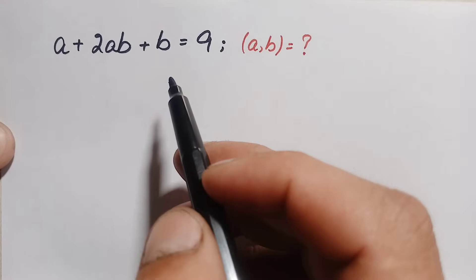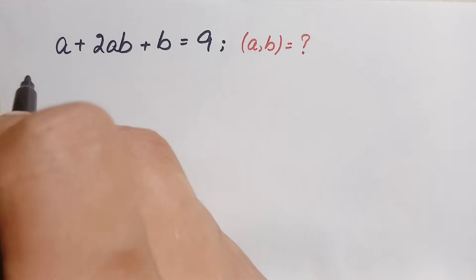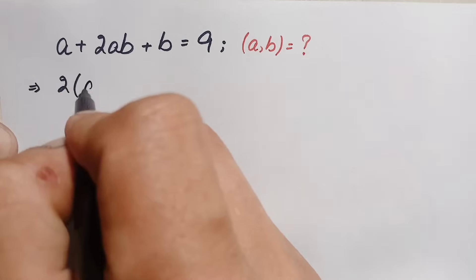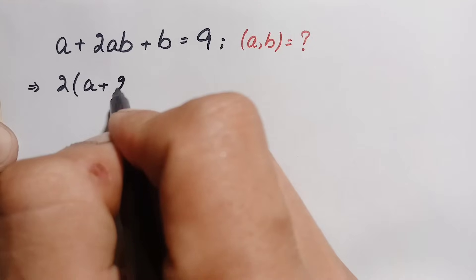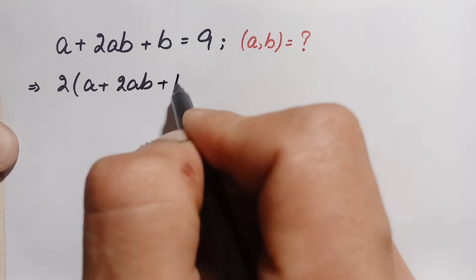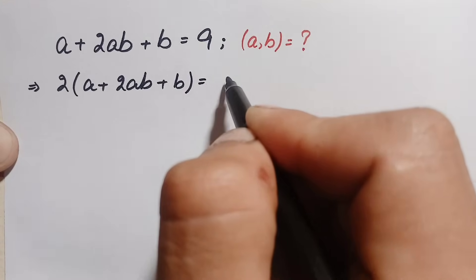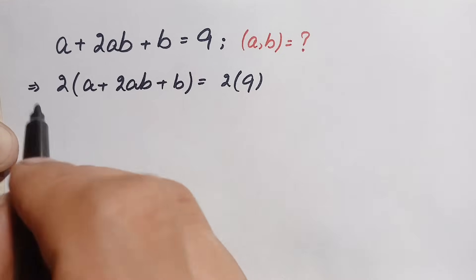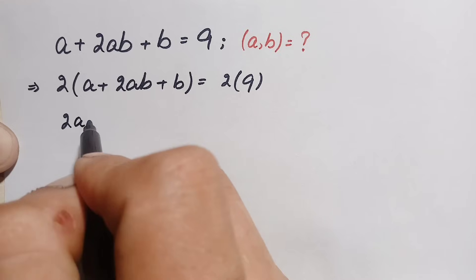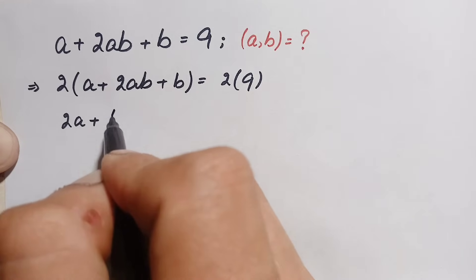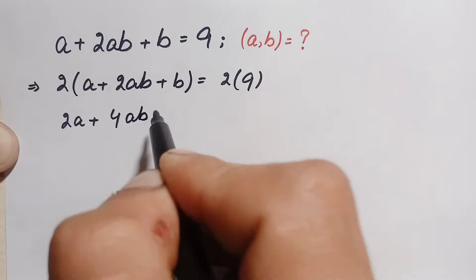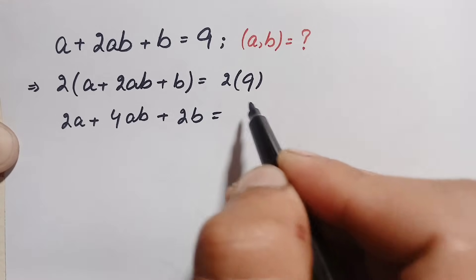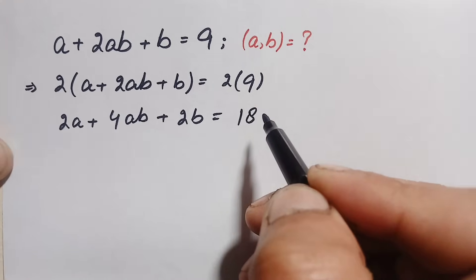First of all, we will multiply 2 on both sides of this equation. So this becomes 2 times (a + 2) times (ab + b), which gives us 2a plus 4ab plus 2b, equal to 2 times 9, which is 18.